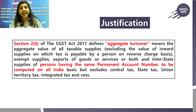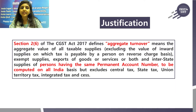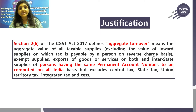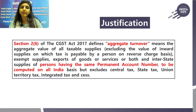Subsection 6 of Section 2 of the CGST Act defines the term 'aggregate turnover.' It means the aggregate value of all taxable supplies, exempt supplies, export of goods or services, and inter-state supplies of persons having the same PAN, to be computed on an all-India basis.